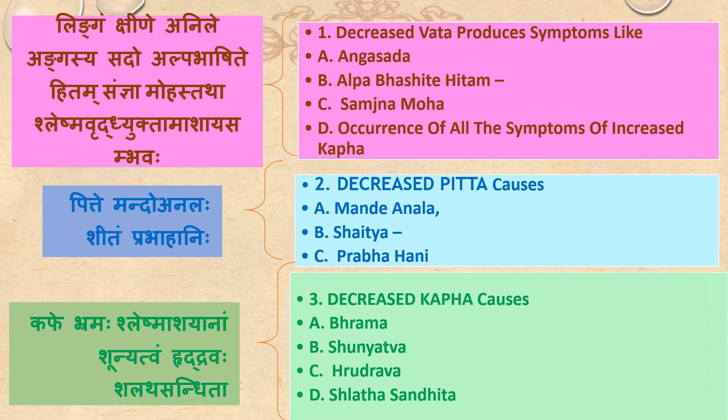Pitha Mandho Analah, Shaitya Prabhahani. Decrease of Pitta causes Mandha Anala (decreased digestive fire), Shaitya (coldness), and Prabhahani (loss of complexion/luster).